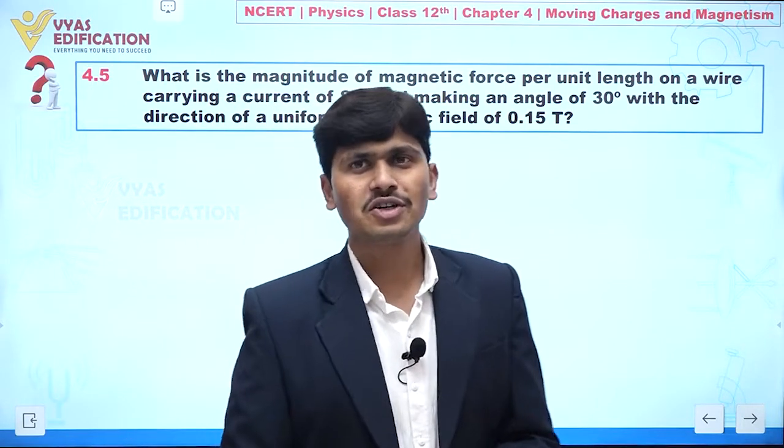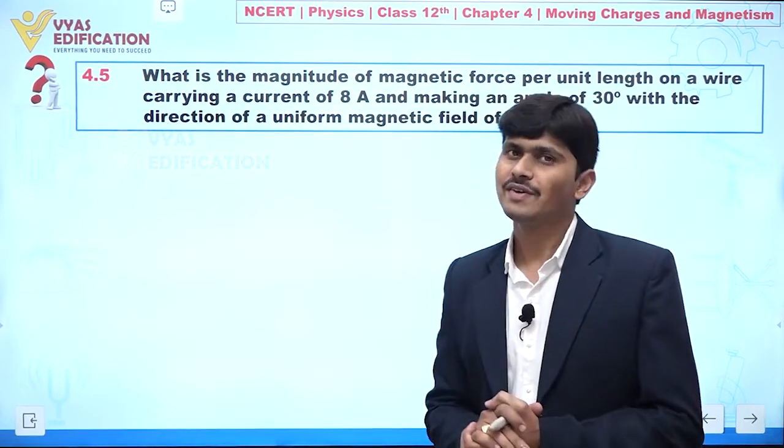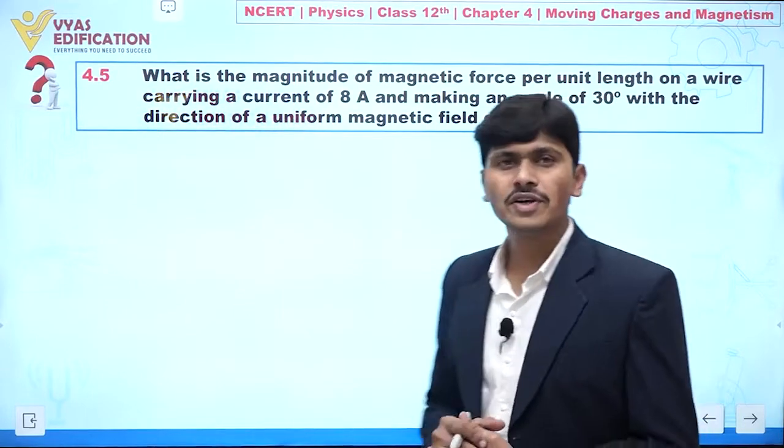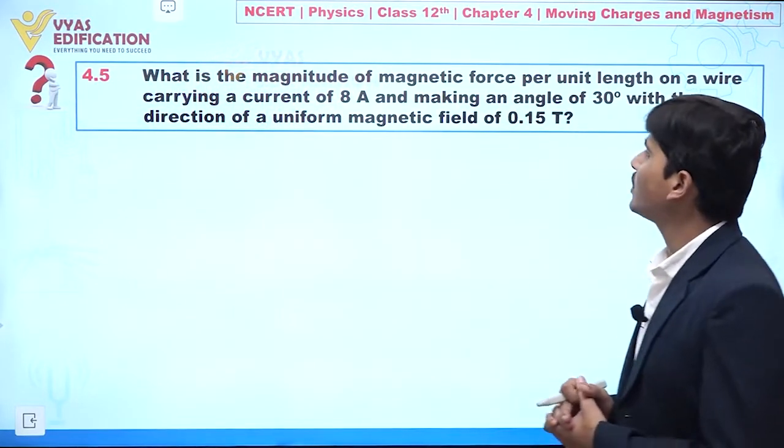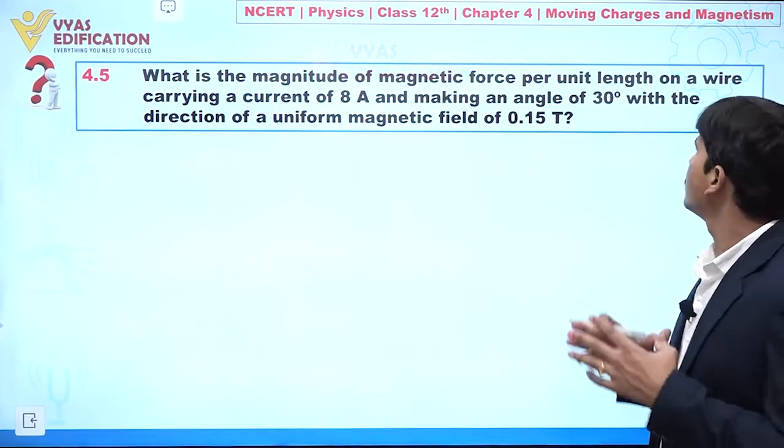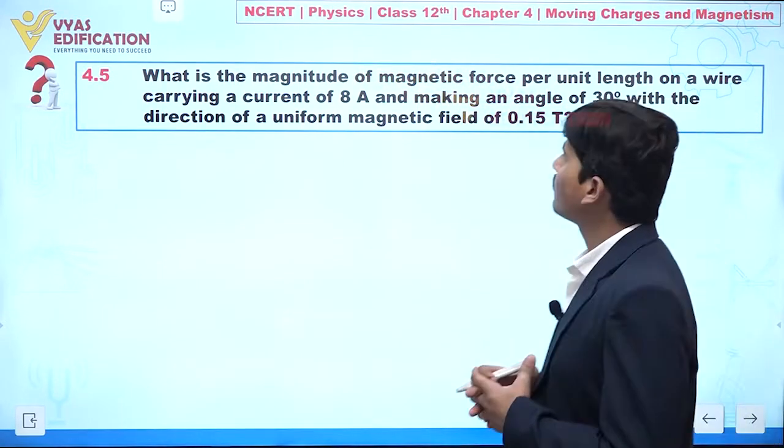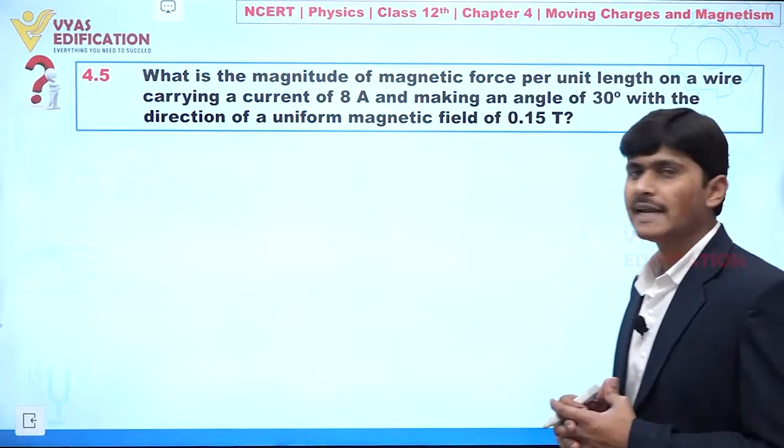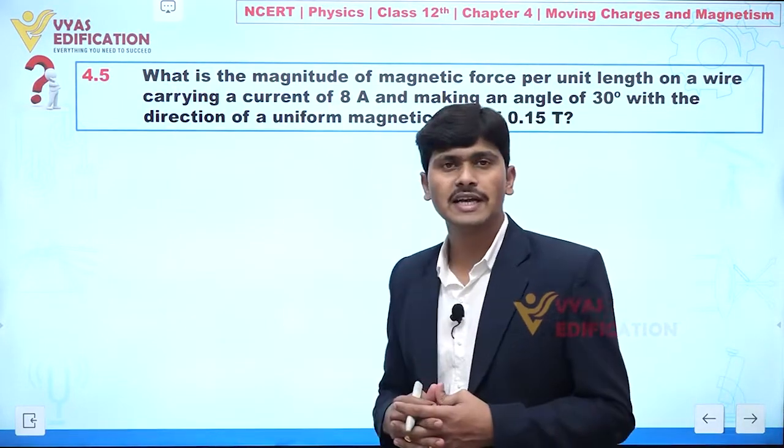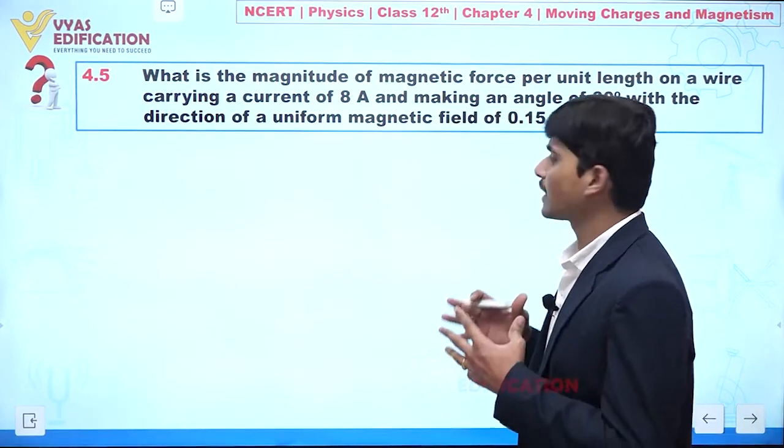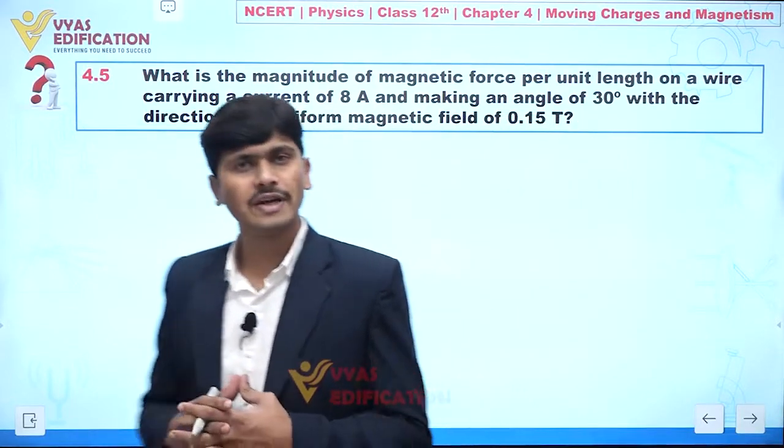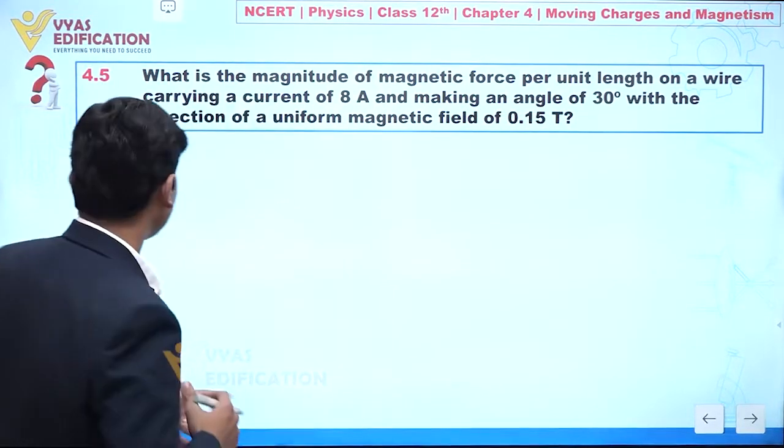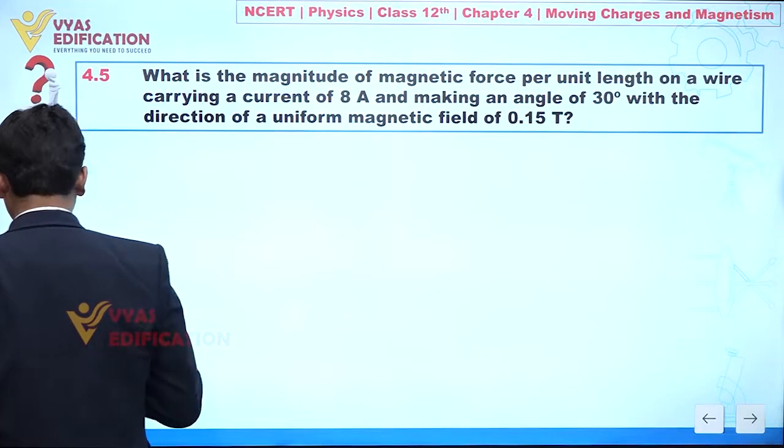Now student, we are going to solve question number 4.5. In this question it is given to you: what is the magnitude of magnetic force per unit length on a wire carrying a current of 8 ampere and making an angle of 30 degree with the direction of a uniform magnetic field of 0.15 tesla? So concentrate on the screen.